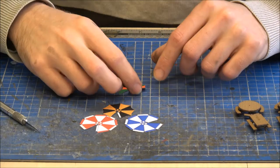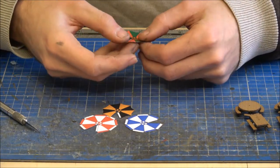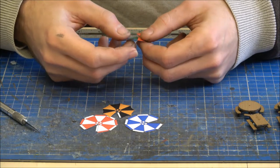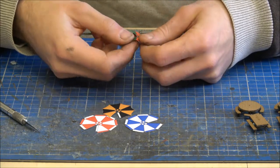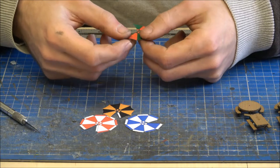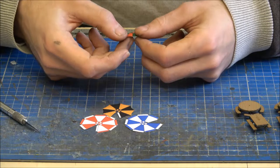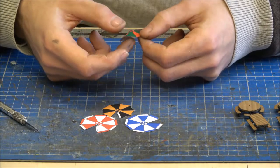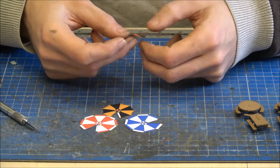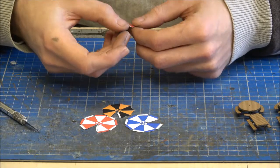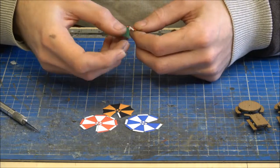So now I've got all these scored, I'm just going to very carefully just bend each score line. Not right over because we don't need it to go right over. But enough to start making the umbrella curl up into a more umbrella type shape.